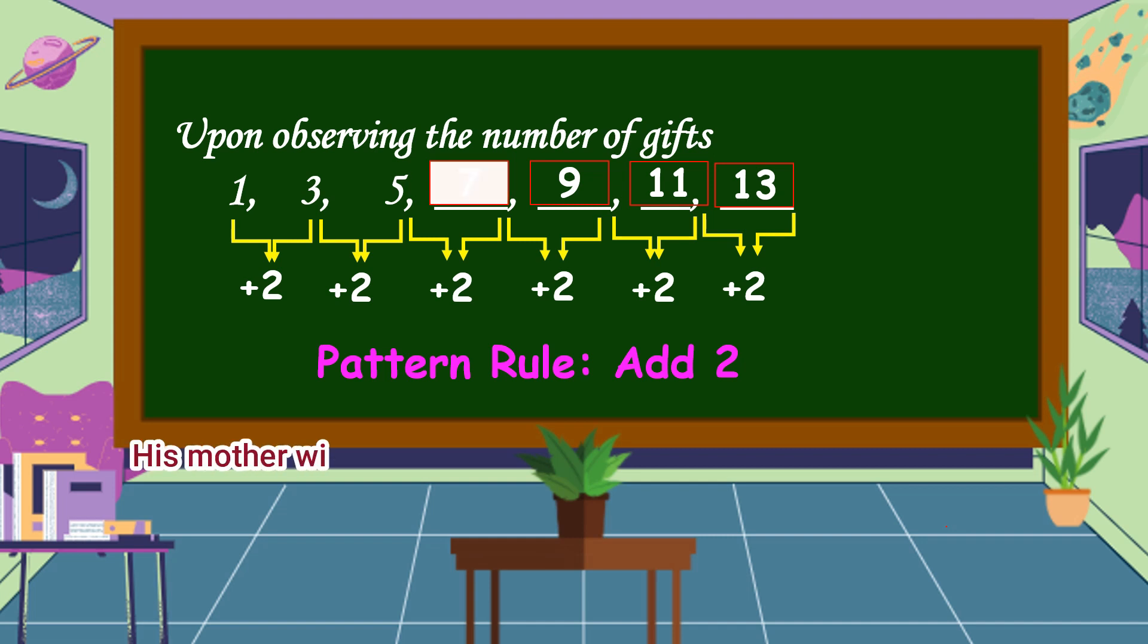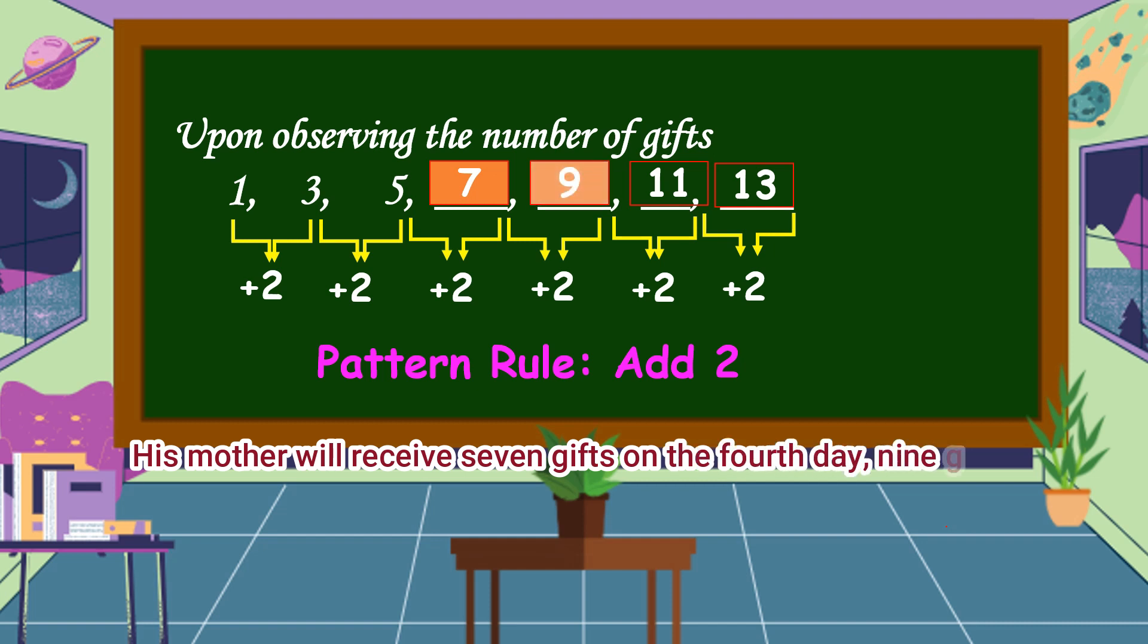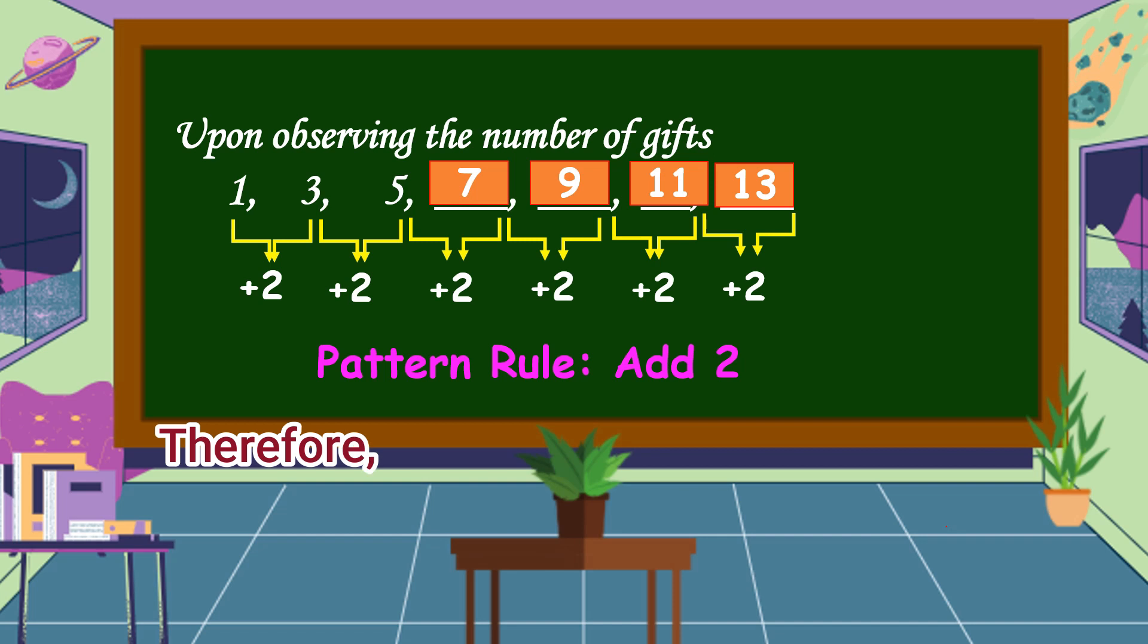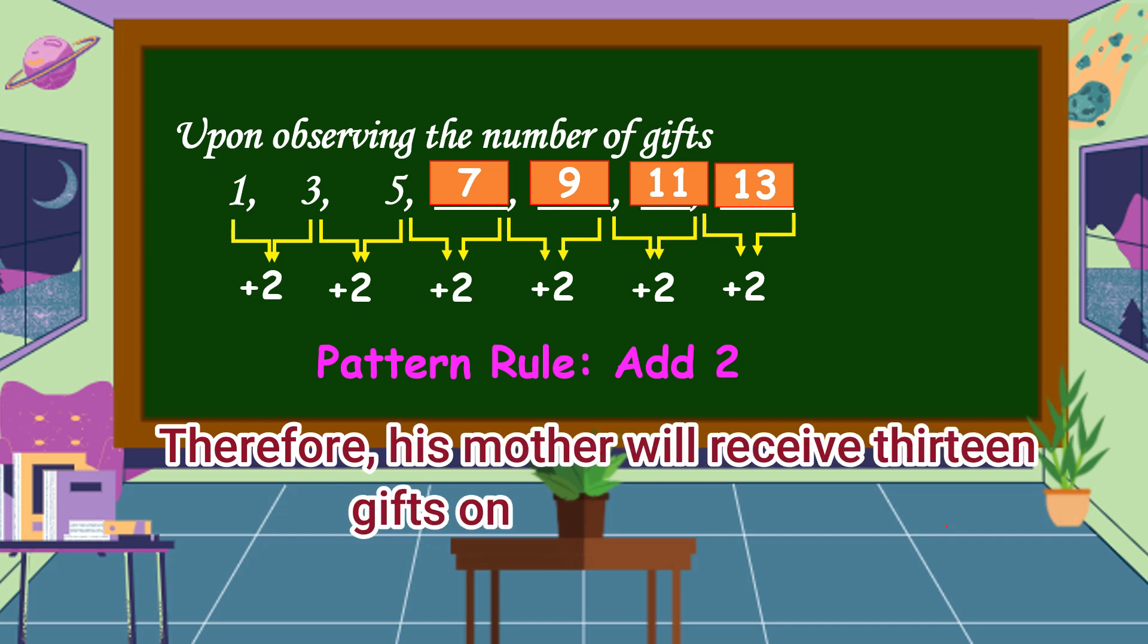His mother will receive 7 gifts on the fourth day, 9 gifts on the fifth day, 11 gifts on the sixth day, and 13 gifts on the seventh day. Therefore, his mother will receive 13 gifts on the seventh day.